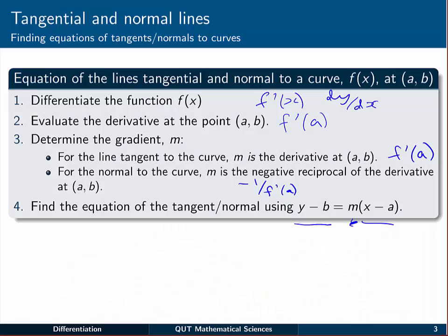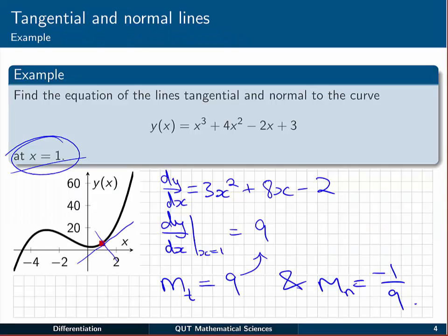The last piece of information we need to know in order to use this formula, the point slope form, is what is the y value when x is equal to 1. So we can write y(1), and use the formula given in the question, will be equal to 1³ + 4(1²) - 2(1) + 3, which is 5 - 2 is 3 plus another 3 is 6.